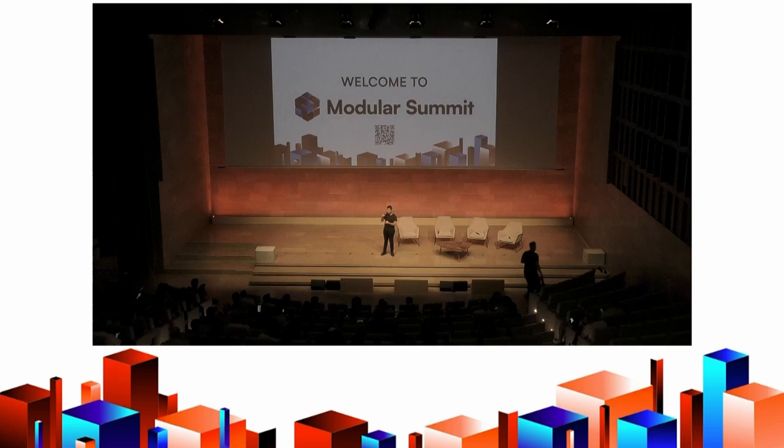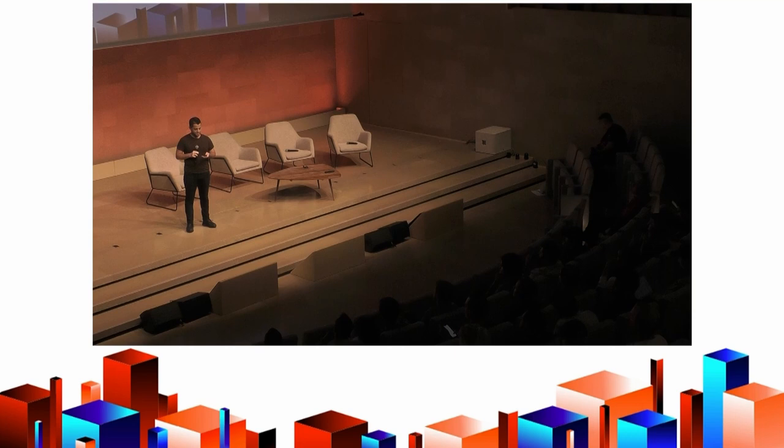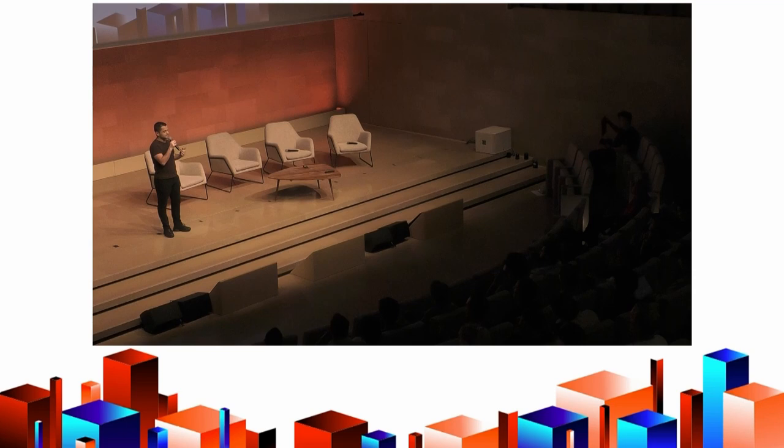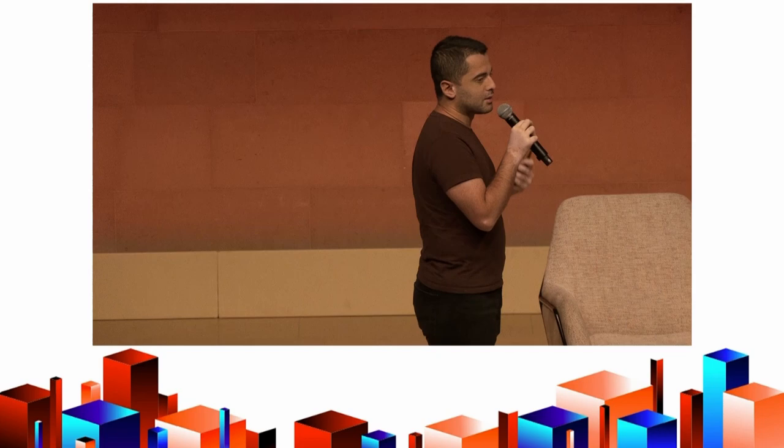So putting that all together, what is a modular blockchain? A modular blockchain is basically a blockchain that fully outsources at least one of the four components of a blockchain — that's either consensus, data availability, settlement, or execution.